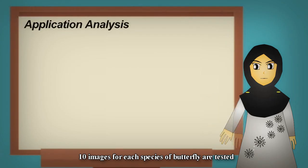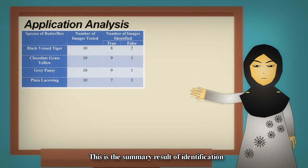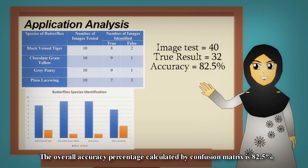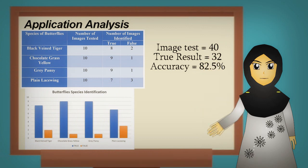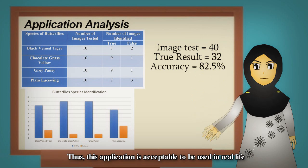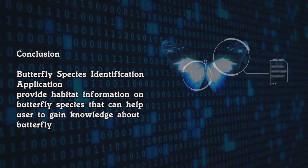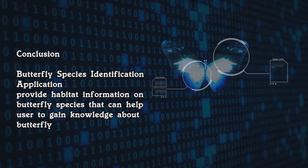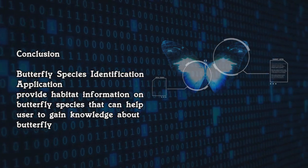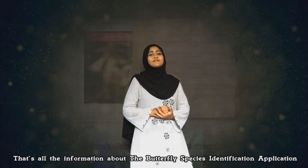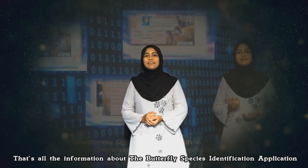Ten images for each species of butterfly were tested. This is the summary result of the identification. The overall accuracy percentage calculated by the confusion matrix is 82.5%. Thus, this application is acceptable to be used in real life. The Butterfly Species Identification Application provides habitat information on butterfly species that can help users gain knowledge about butterfly species.